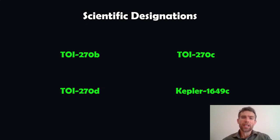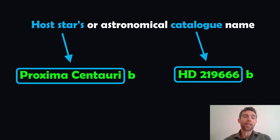They get a scientific designation, a name scientifically. These are just some random names here. TOI 270b, you've got a Kepler one there. This is the sort of name that you'd expect for an exoplanet that's just been discovered. So how does it actually get that name?